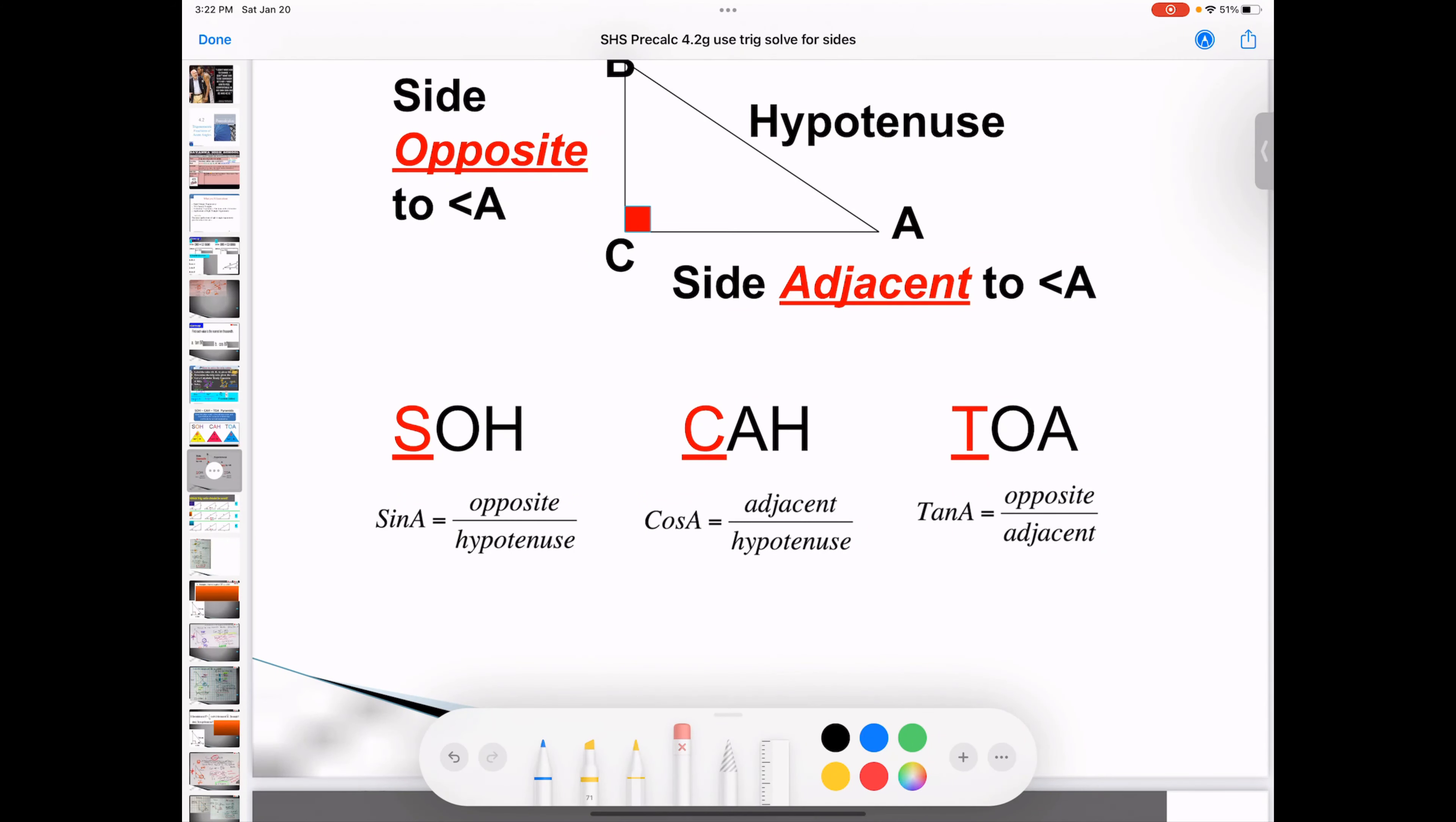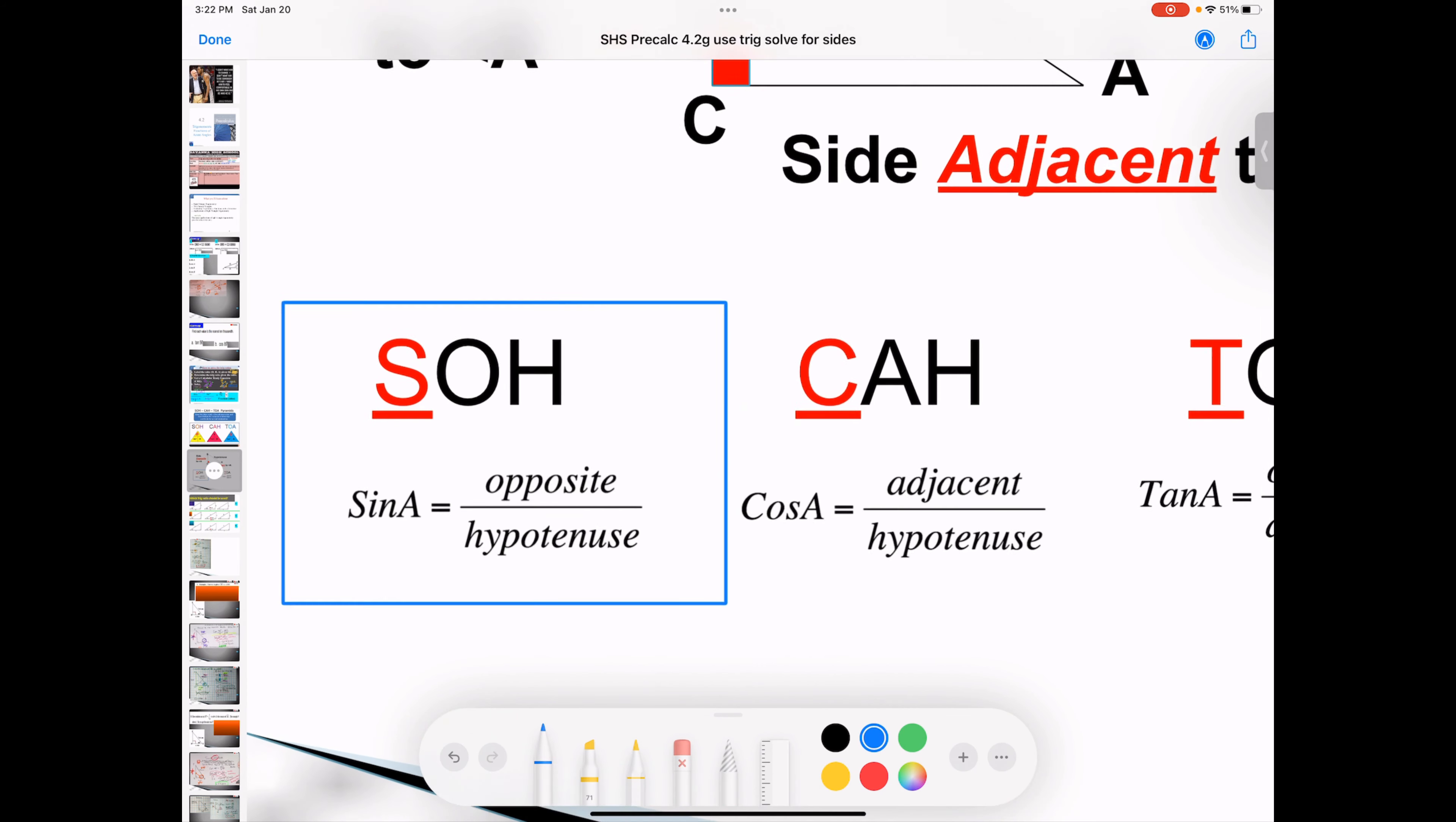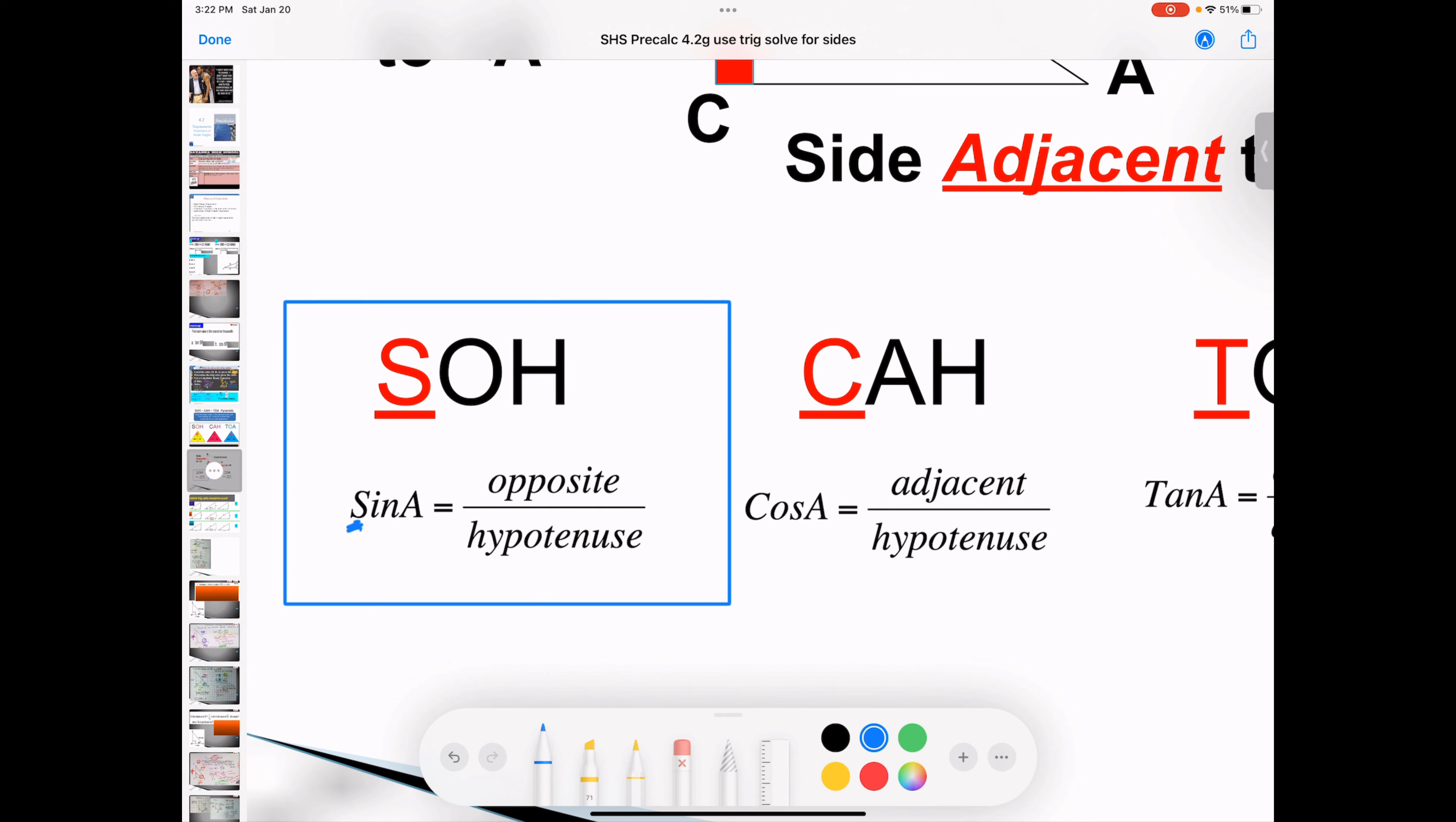So how do you know which is the basic three trig functions? Well, we have sine, cosine, and tangent. Sine is the opposite over the hypotenuse. That's normally abbreviated as SOH.